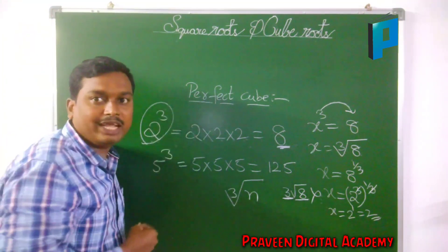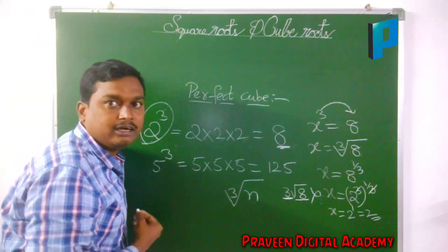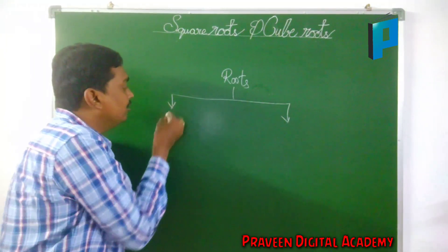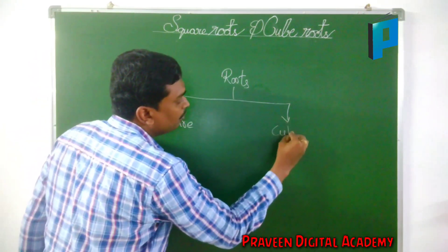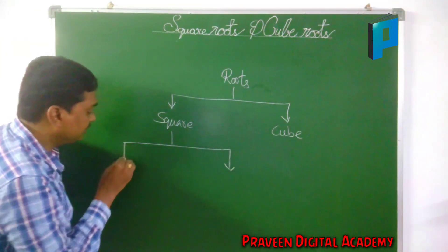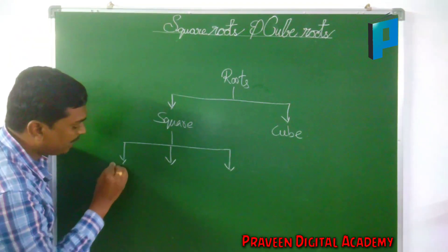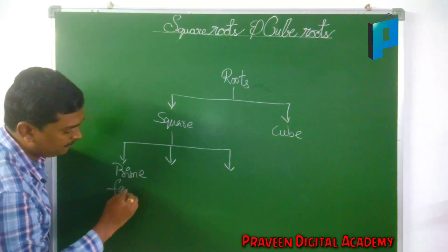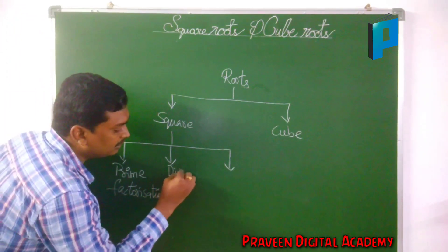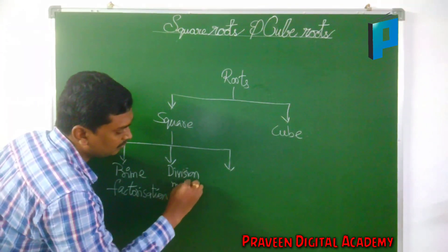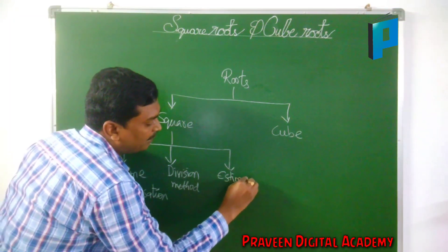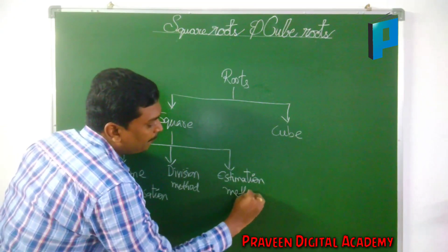Now let us see how many ways we can find square roots and cube roots. We can find roots in two forms. Square roots can be found using three different methods: the first method is the prime factorization method, the second method is the division method, and the third method is the estimation method.